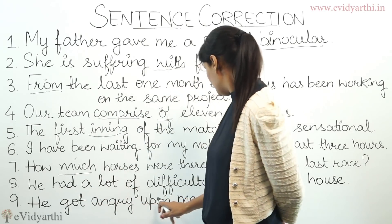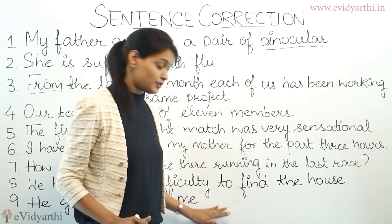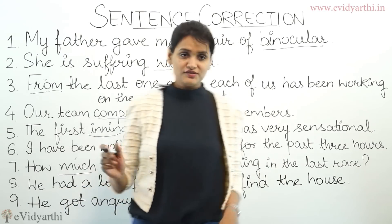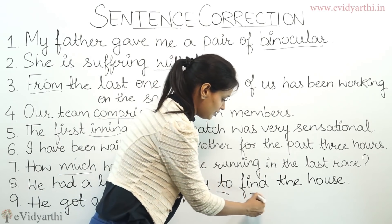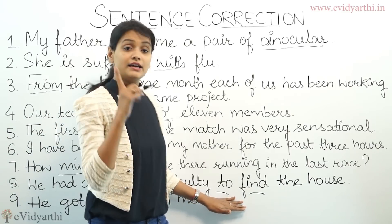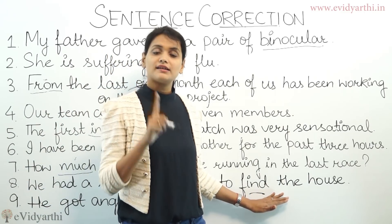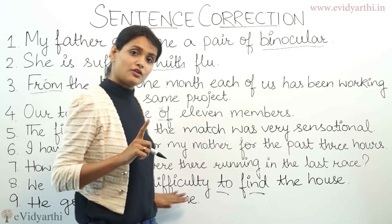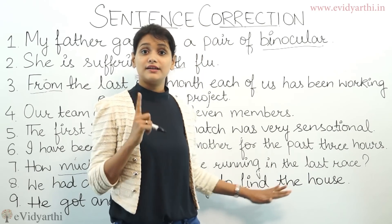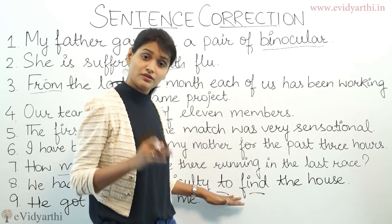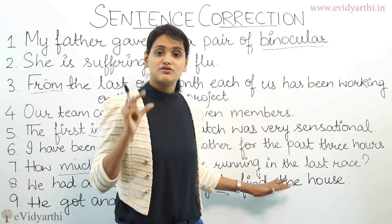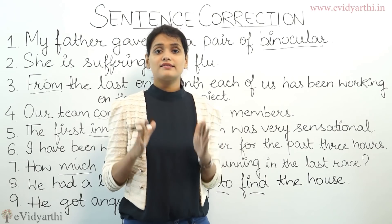Next: we had a lot of difficulty. What's wrong here? After 'difficulty,' what preposition comes? We had a lot of difficulty in — after 'in' there is always a verb with -ing. I have a lot of difficulty in finding the house. After 'difficulty' we never use 'to.' We use 'in' and whatever verb follows takes the -ing form. So: I had a lot of difficulty in finding the house.